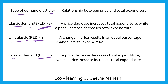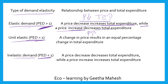For elastic demand — greater than one — a price decrease increases total expenditure, while a price increase decreases total expenditure. In both cases, price and total expenditure are moving in opposite directions. This opposite direction movement indicates that price elasticity of demand is greater than one.